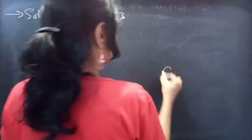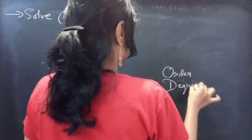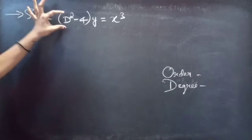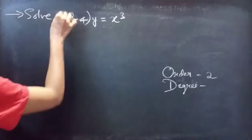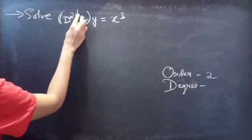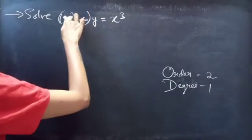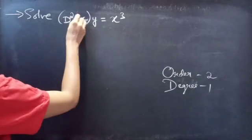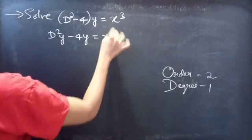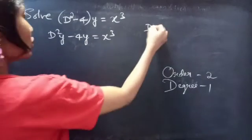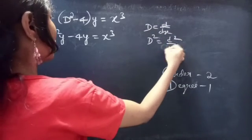Firstly, let's find the order and degree of the given differential equation. Identify the highest derivative here — D squared is the highest derivative, so the order is 2. And the highest power of the highest derivative is the degree. We know that D is a differential operator, so we can write D squared as d squared by dx squared.